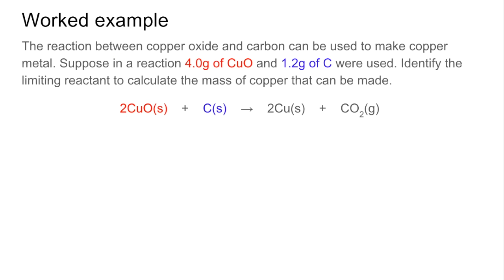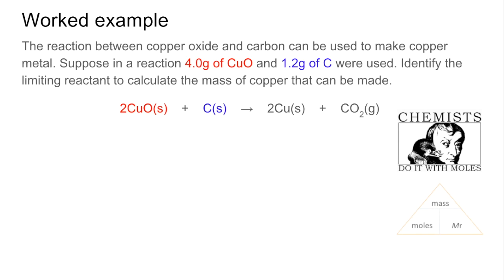So we'll use that to help us with this worked example and then hopefully once you've got the idea you can try the other two yourself and then play on for the answers. So we've got a reaction between copper oxide and carbon to make copper metal. We've got four grams of copper oxide and 1.2 grams of carbon. We've got to identify the limiting reactant and then from that calculate the mass of copper that could be made. Now chemists work in moles so the first thing we're going to do using the mass moles MR triangle is calculate the moles of each chemical.